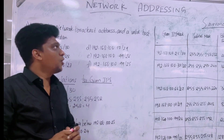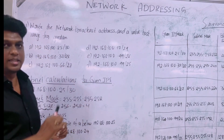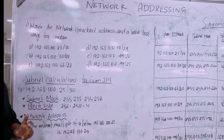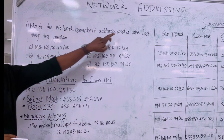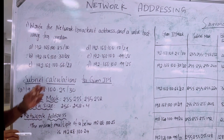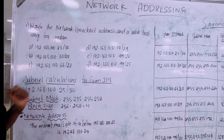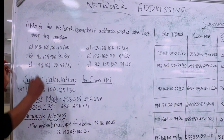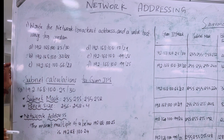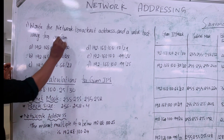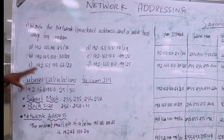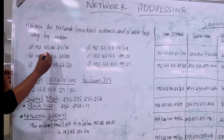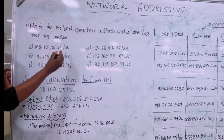Welcome to this video on network addressing. Here we are going to define the network address, broadcast address, and valid host range for a given IP address. We are given six IP addresses, and we should find the network address, broadcast address, and valid host range for all of them. The first is 192.168.100.25/30.